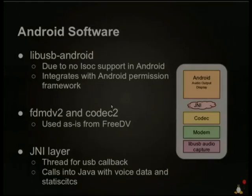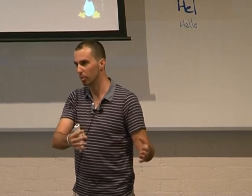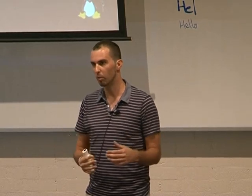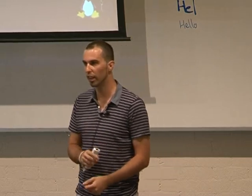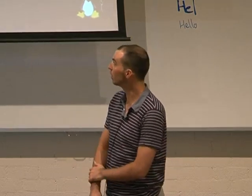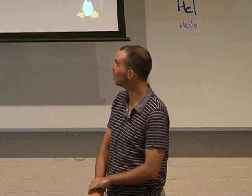One complication was that LibUSB likes to talk to the USB device directly, but under Android you have a strict permissions model. So you need to integrate the C library with this Java permissions model — it gets all kinds of complicated. Luckily someone else had done the work for me: LibUSB Android is a project on GitHub. Thanks very much to the person that wrote that code.